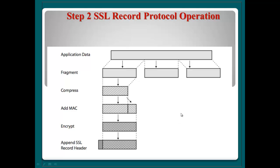Step two: SSL record protocol operation. When the SSL record protocol receives application data from a higher layer, the data will be fragmented. Each fragmented unit has a maximum of 16,384 bytes. After fragmentation, the next step is optional compression. Then a MAC — message authentication code — is added using SHA or MD5, followed by encryption with the shared key, and finally the SSL record header is added.